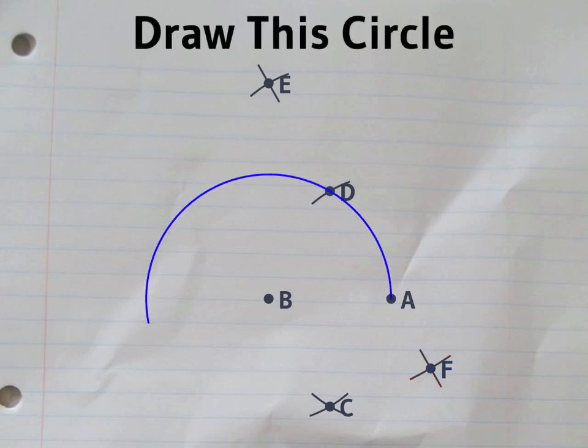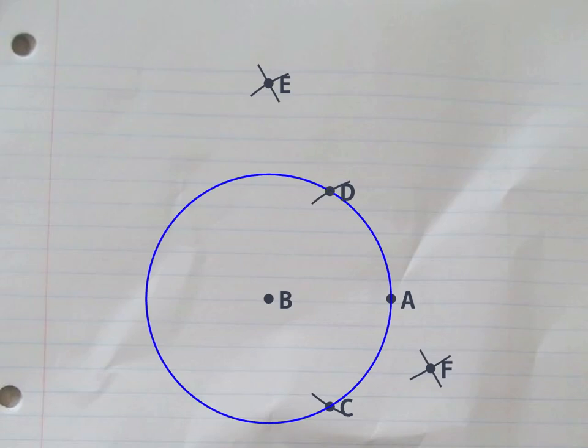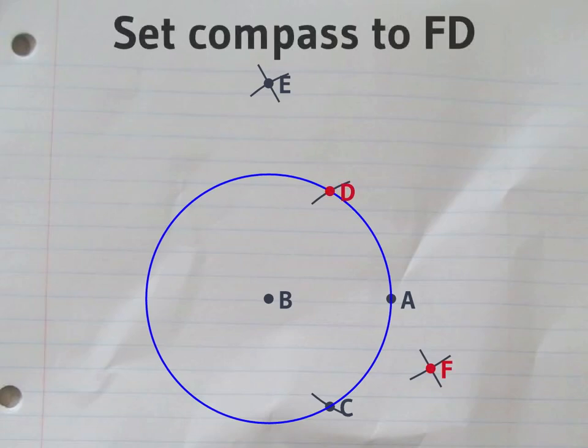Now redraw the original circle centered on B, and set the compass to the distance between F and D.